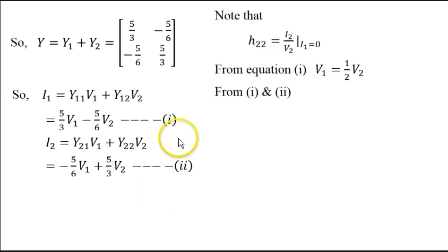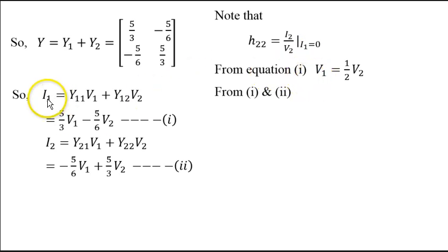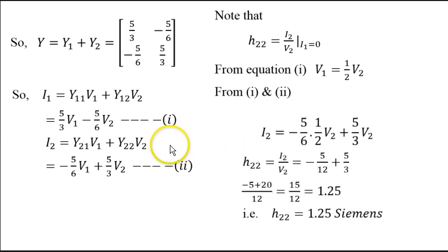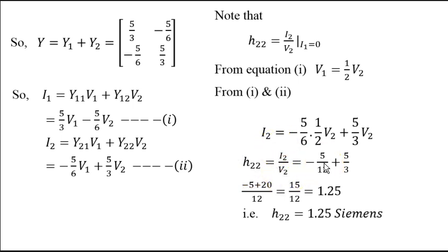Now we can write H22. H22 is I2 over V2 with I1 equal to zero. From equation one, when I1 is zero: (5/3)V1 = (5/6)V2, so V1 = V2/2. Substituting this into the second equation: I2 = −(5/6)·(V2/2) + (5/3)·V2. Simplifying — that gives minus 5/12 plus 5/3, which comes to minus 5/12 plus 20/12 — and so H22 = I2/V2 comes to 15/12, which equals 1.25.